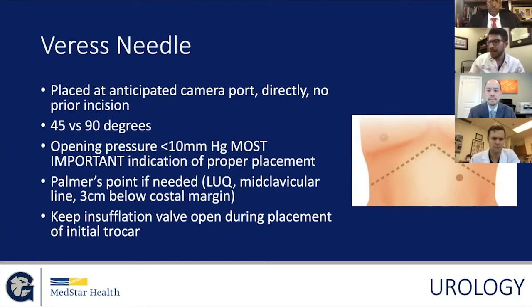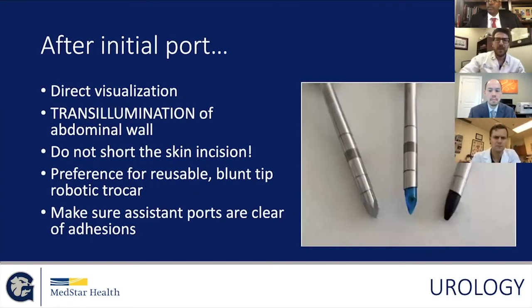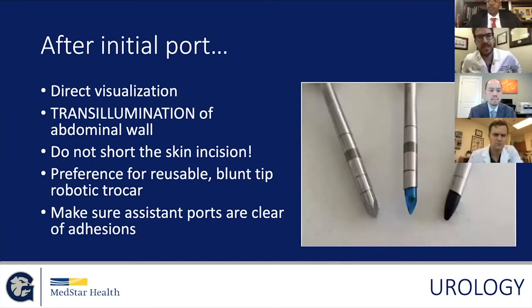I place my port — now I have the XI — using a 12 millimeter port placed directly after I have 15 millimeters of mercury. Keeping the insufflation valve open, I go very slowly and feel those fascial layers. Once I hear that air, I know I'm in the right place. After initial port placement, direct visualization is key. Transillumination is helpful to avoid those cumbersome bruises, but it doesn't always work and won't show you the epigastrics or work for high BMI patients.